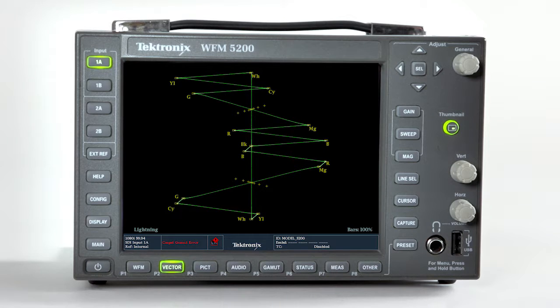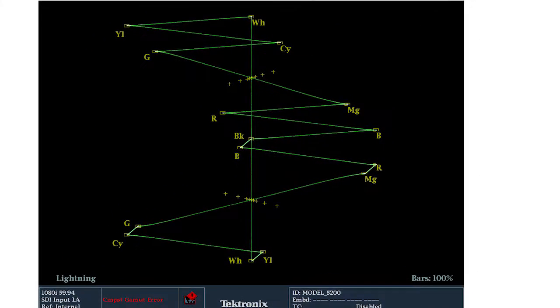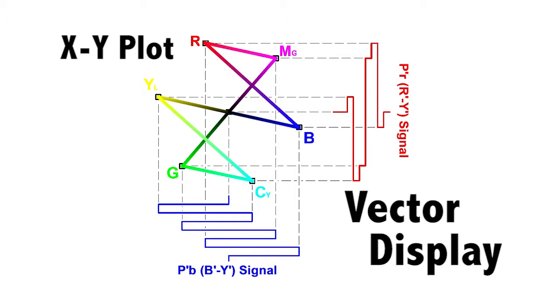Tektronix developed the patented lightning display to monitor the three components of a YPbPr signal. A traditional vector display is an XY plot of the color difference signals and provides little information of the Luma signal component.